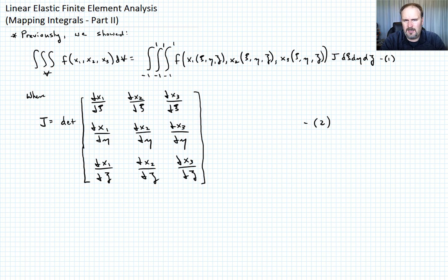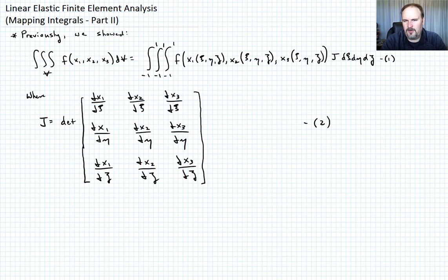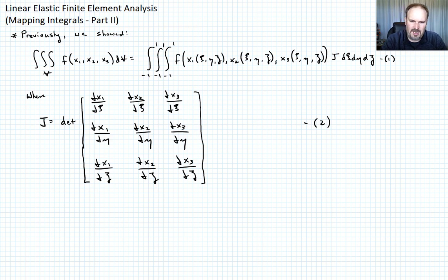In this lecture we want to continue talking about how we map integrals so that we can apply Gauss quadrature. I want to remind you first of what we showed in part one. We showed that we could take some integral over the volume with integrand f, which is a function of x1, x2, and x3, and convert that into an integral in natural coordinates from negative one to one on xi, eta, and zeta of f, substituting in x1, x2, x3 as functions of xi, eta, and zeta, times the Jacobian J, integrating over d-xi, d-eta, and d-zeta. J is the determinant of the Jacobian matrix, which is the partial of x1, x2, x3 with respect to xi, eta, and zeta.